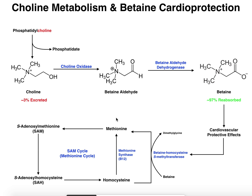Here's the important reaction with clinical implications: methionine synthase takes homocysteine and regenerates methionine. This is a B12-dependent reaction — it requires vitamin B12 — and it also has an indirect requirement for tetrahydrofolate, specifically methyl tetrahydrofolate, which comes from folate, another B vitamin. Without methionine, you can't generate SAM, and you'll have a low degree of methylation, which causes problems.